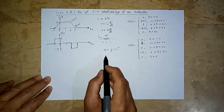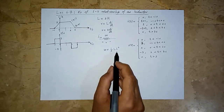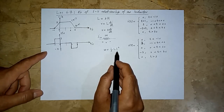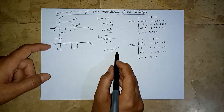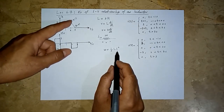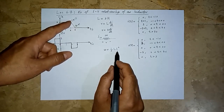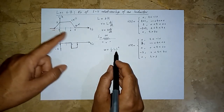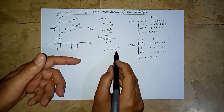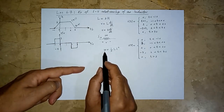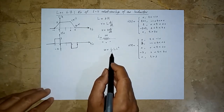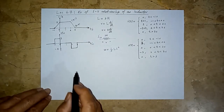The inductor stores energy in the magnetic field within it. If i is 0 — whether crossing zero from negative to positive or from positive to negative — when there is no current flowing through an inductor, the energy contained within the inductor is 0.